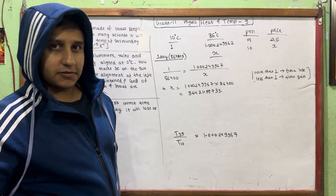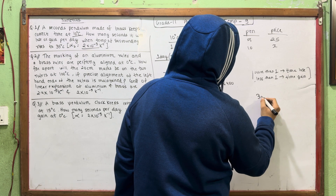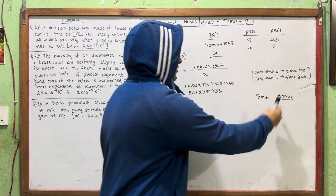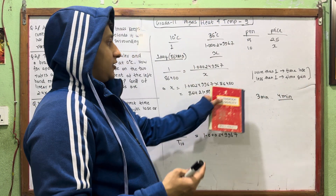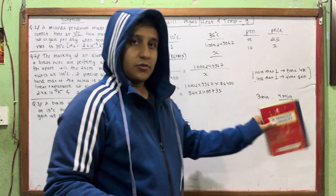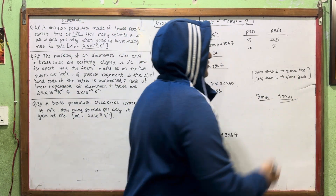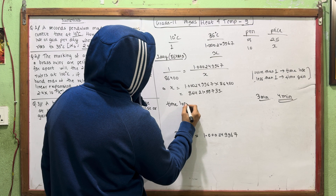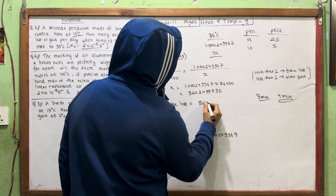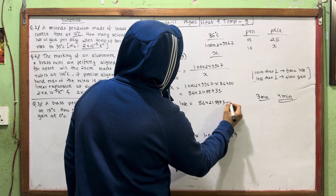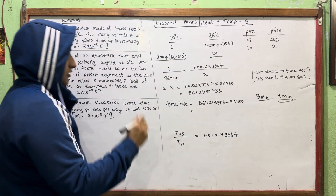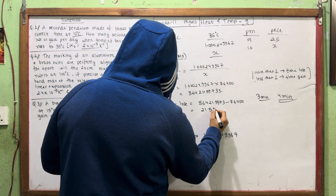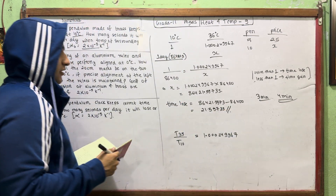Working through the calculation: 86421.5973 minus 86400. So time lost equals approximately 21.5973 seconds. The pendulum loses time when temperature increases.